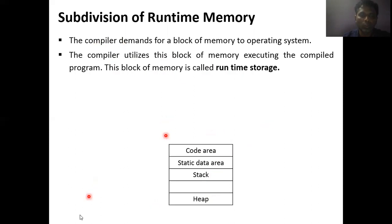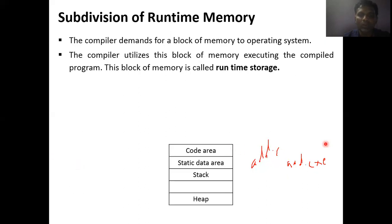Suppose I have a file called addition.c. We convert addition.c into addition.exe. Whenever I convert that into machine code, we know how much area we need — this is fixed size data. This fixed size data we keep in the code area. Static data area is for fixed size memory allocated for constants or global variables. The code area and static area represent static memory required, while stack and heap represent runtime memory required.